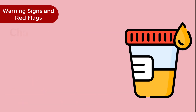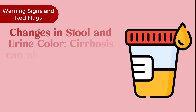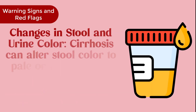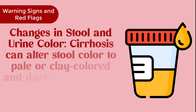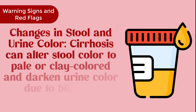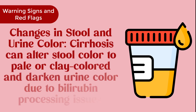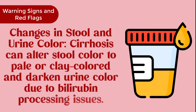Changes in stool and urine color: Cirrhosis can alter stool color to pale or clay-colored and darken urine color due to bilirubin processing issues.